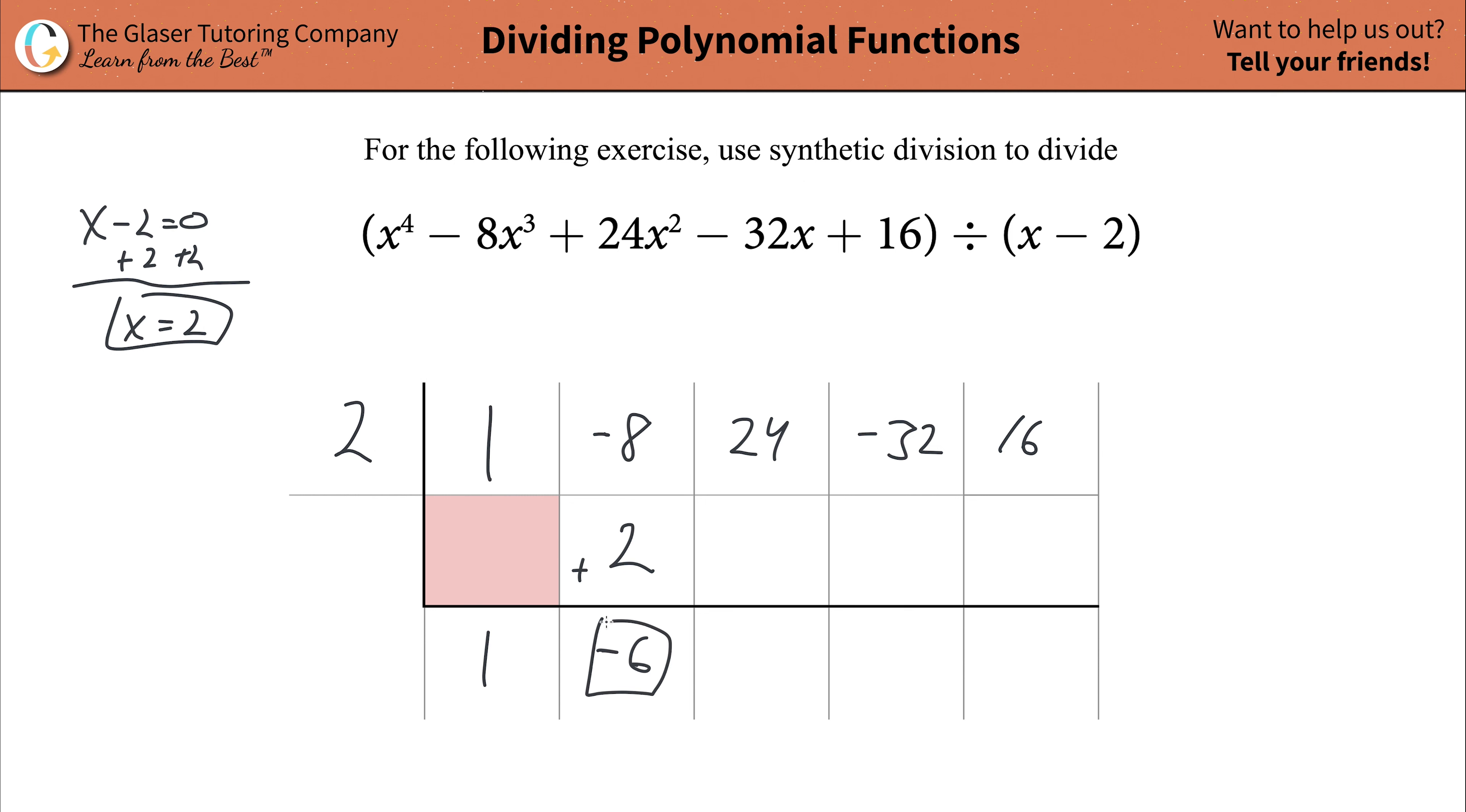Now just repeat the process. Take this value, multiply it by the outside value. Negative 6 times 2 is negative 12. Then add this column together, which should be a positive 12. Take this value of 12, multiply it by 2, put its result in the next adjacent cell of 24. Add these two together: negative 32 and positive 24 should be negative 8. Then take your negative 8, multiply it by that outside value of 2, and that's negative 16. Then add this column together and you get your last value of 0.